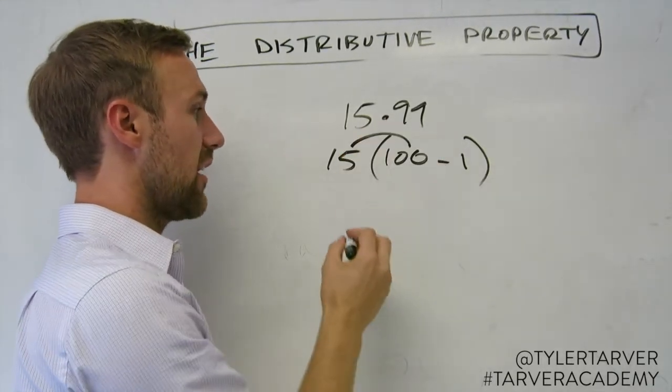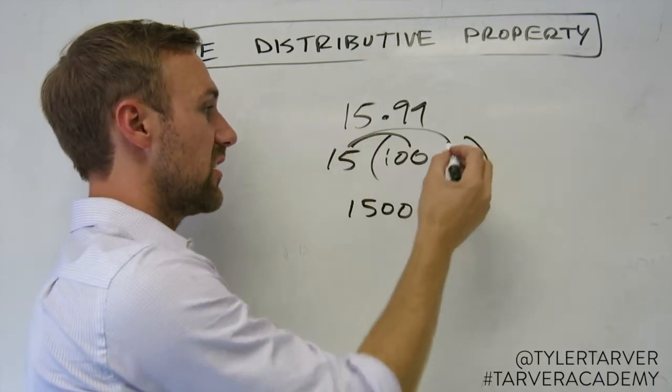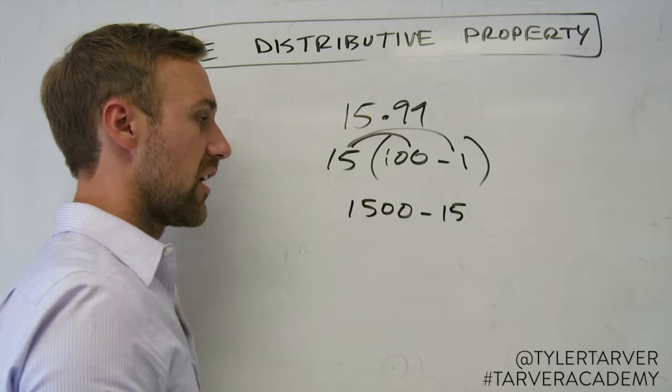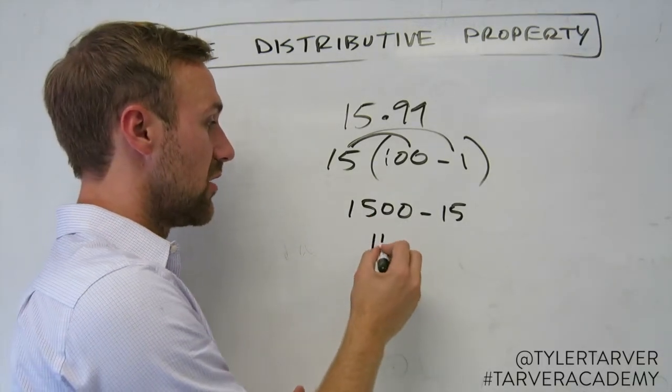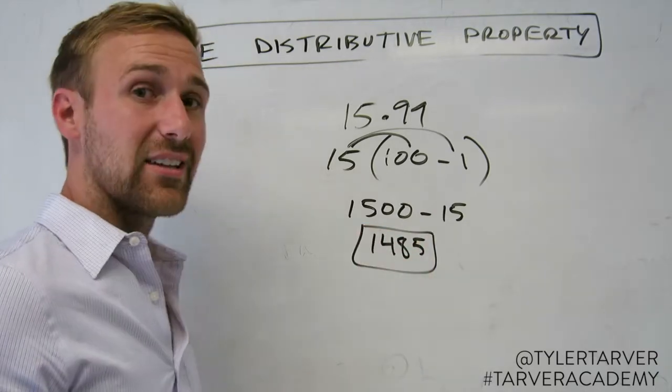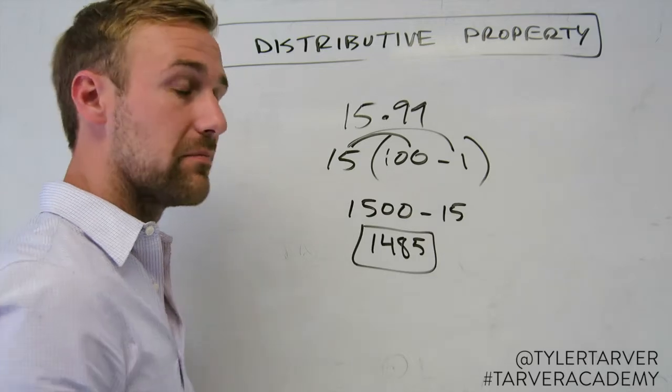I just turned this into something I can do the distributive property for. Take the 15, go in there. I know that's 1500 because I just take off the 1, put the 15, two zeros. 15 times 1 is 15. Then this makes it more manageable. I just subtract those and it'd be 1485. I found my answer all in my own brain. Thank you, brain. Thank you, advanced distributive property.